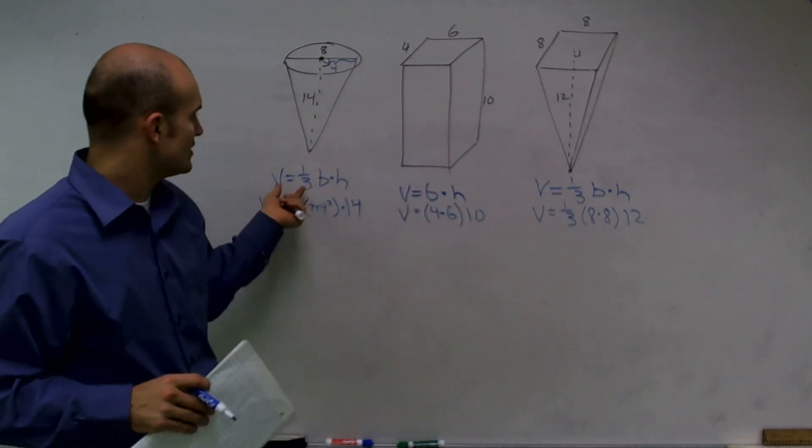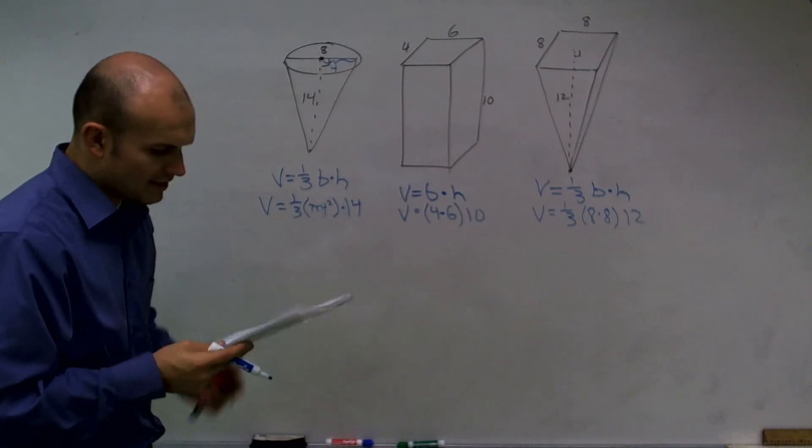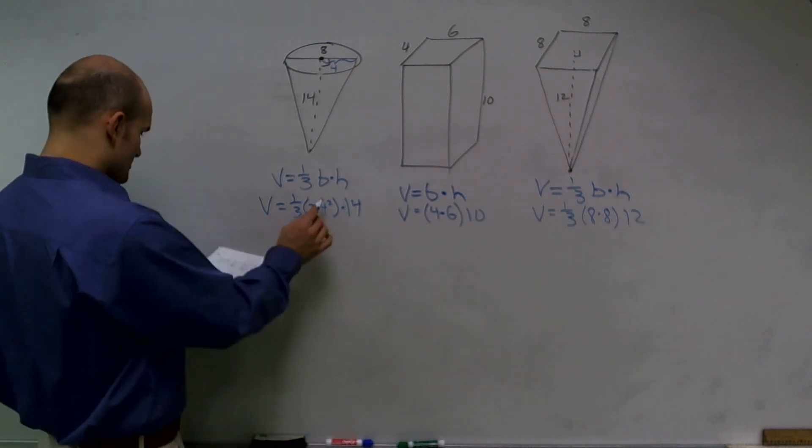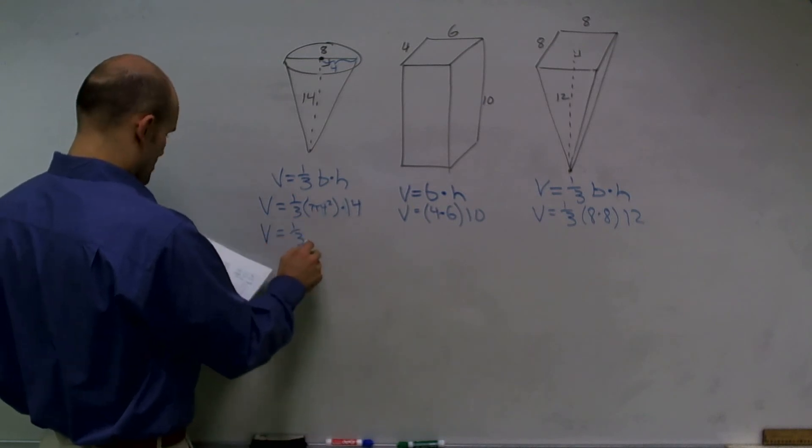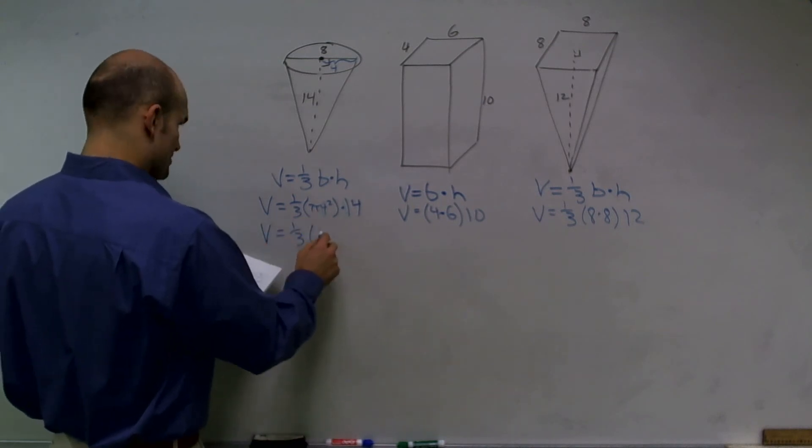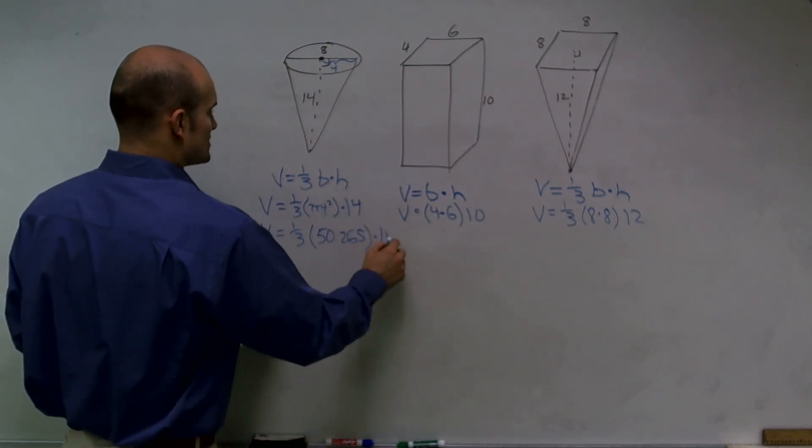So, I did some work out here for them, and what I figured out was, when I find the volume, I get volume equals one-third, and that's going to be 50.265 times fourteen.